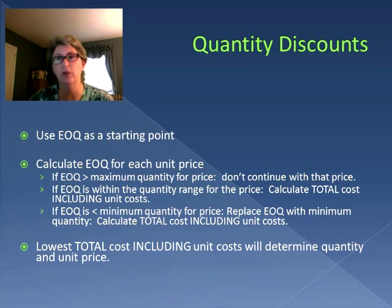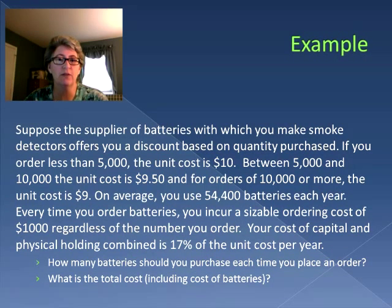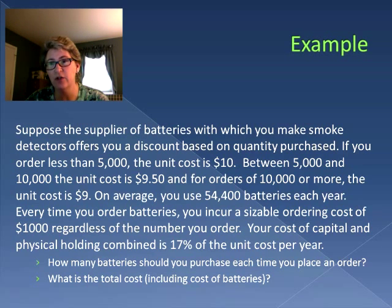Let's take a look at an example. Suppose the supplier of batteries with which you make smoke detectors offers you a discount based on quantity purchased. If you order less than 5,000, the unit cost is $10. Between 5,000 and 10,000 it's $9.50, and for orders of 10,000 units or more we're only charged $9. On average we use 54,400 batteries each year.